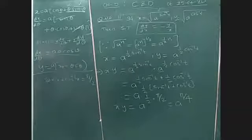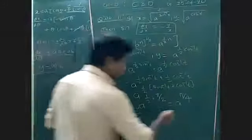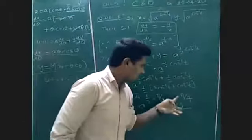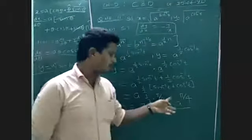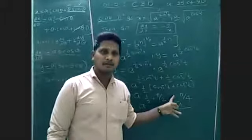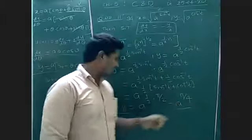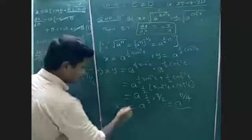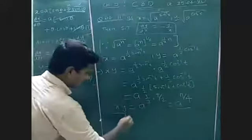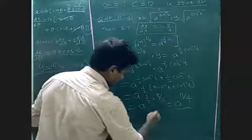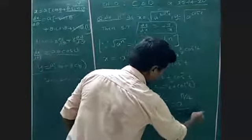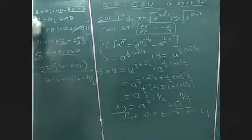So x·y = a^(π/4). Now differentiate. We need to find dy/dx. Differentiate both sides with respect to x. Left side: apply product rule — let x be u and y be v. d/dx of x·y = d/dx of a^(π/4).